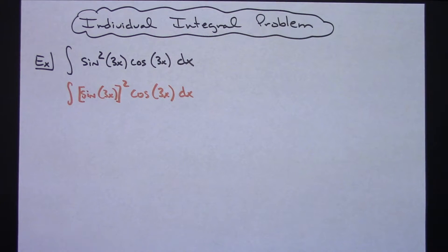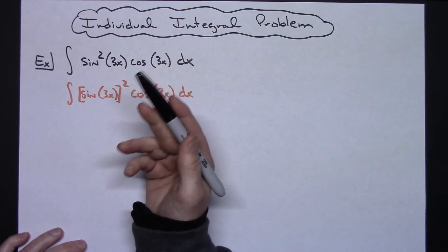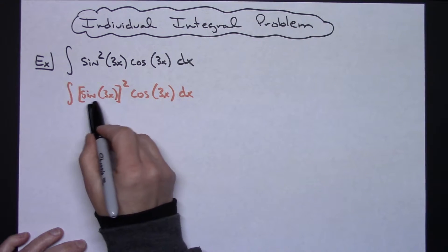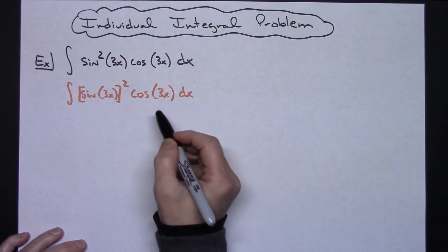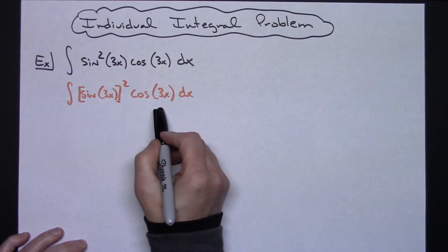That's going to help you to pick your u. We want to pick something that's kind of on the inside, and if I let my u be sine of 3x, then when I take the derivative I'm going to get a 3 cosine 3x, which then is going to allow that to cross out.